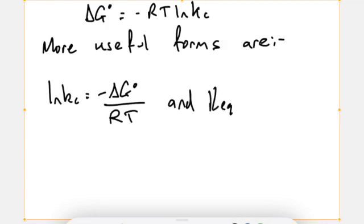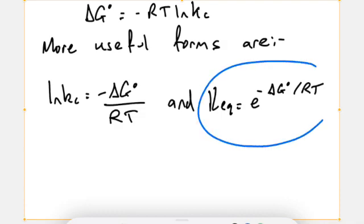If we make lnKc, or log K, the subject, it's minus, don't forget the negative, delta G over RT, where if we follow the rules of logs KEQ or Kc, it's e, which is the inverse of log to the power minus delta G naught over RT.